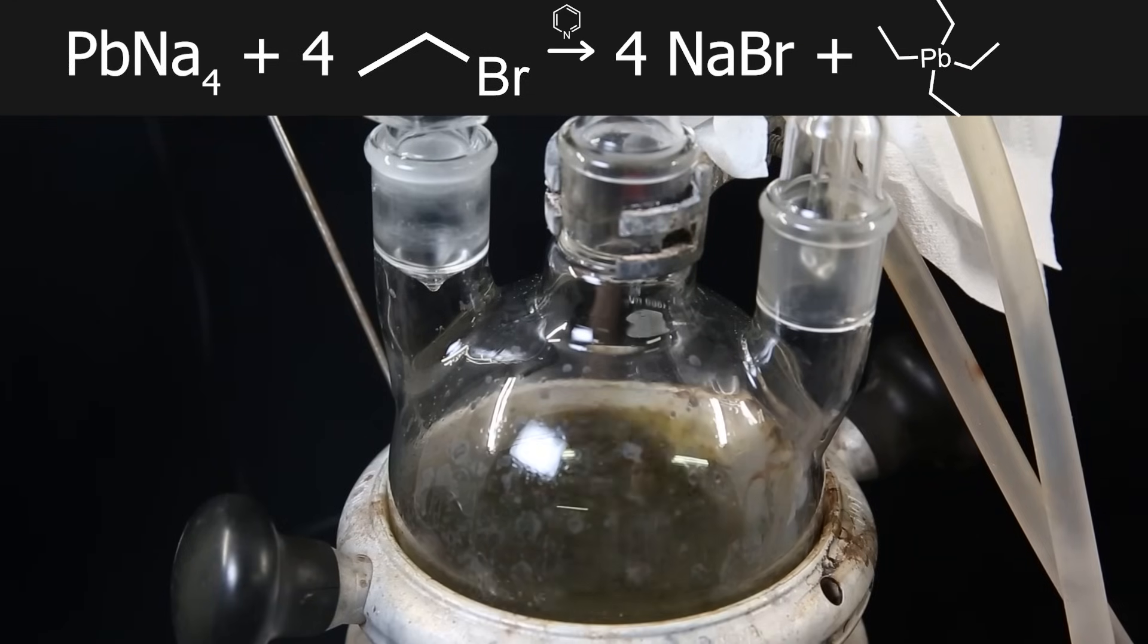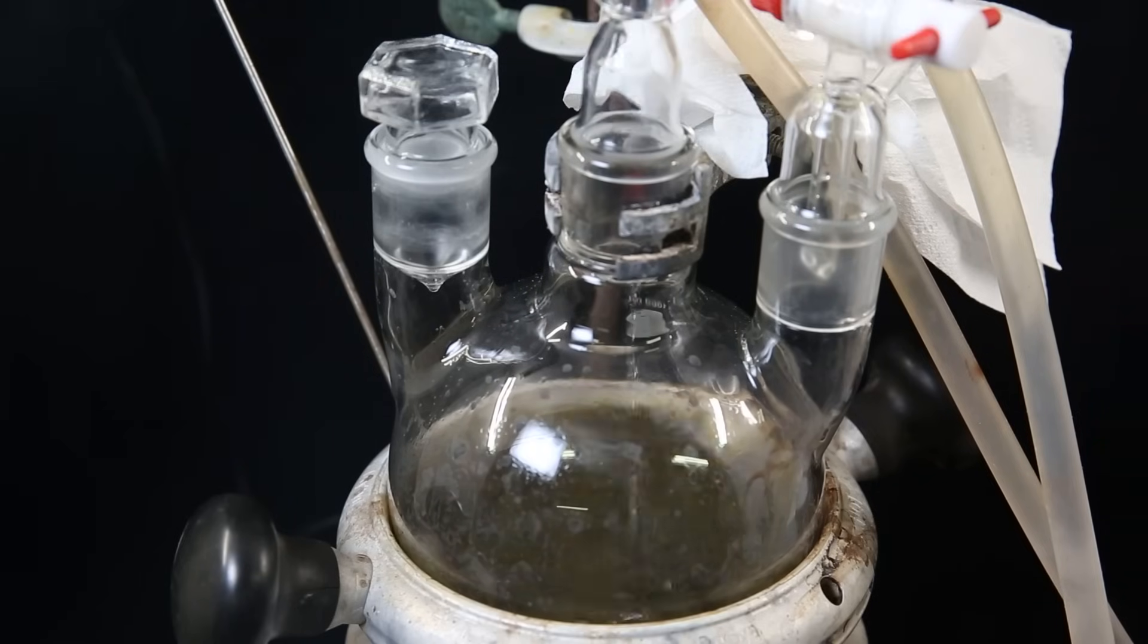In this reaction, the sodium lead alloy will react with the bromoethane under the influence of pyridine to form sodium bromide and tetraethyl lead. The reaction is relatively straightforward and is dependent on the sodium content of the alloy and the ability for the reagent to react properly. Adding water during the reaction will help expose fresh alloy that is not covered in oxidation and sodium bromide.